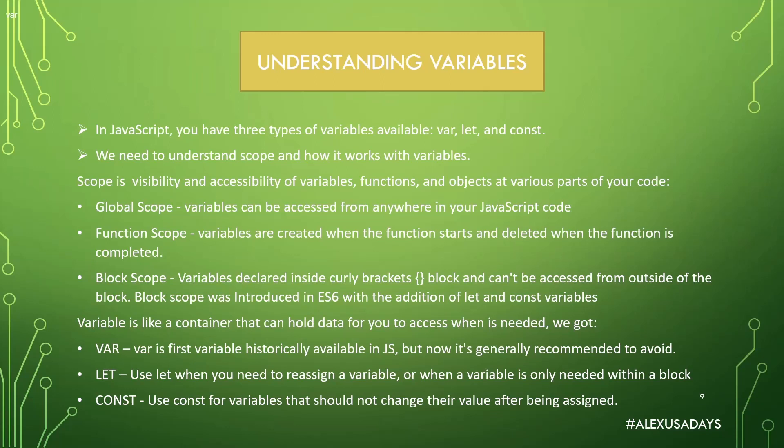There's global scope, so variables can be accessed from anywhere in your JavaScript code when they're in global scope. If you declare variables at the top of your JavaScript file, they will be in the global scope. Then there is function scope, where variables are created when the function starts and deleted when the function is completed. Function scope is for var variables.